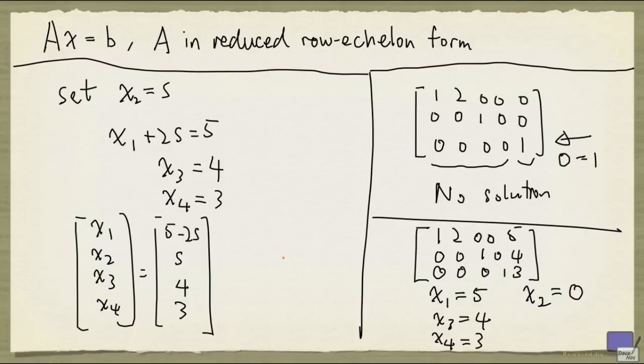So in general, if the augmented matrix tells you that there's going to be a solution, and that there's a free variable, then you're going to have multiple solutions. But if there's no free variable, then you're going to have only a unique solution.